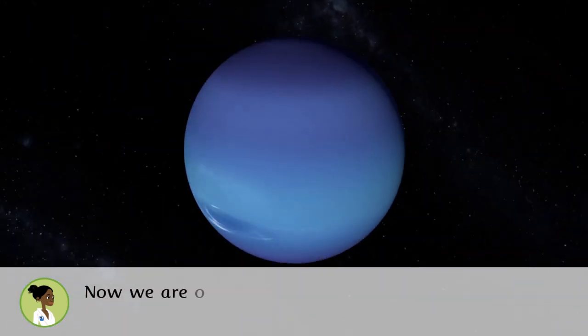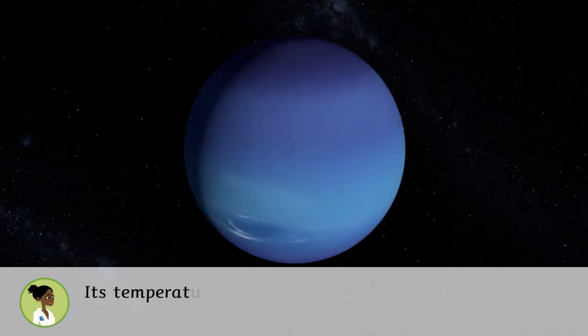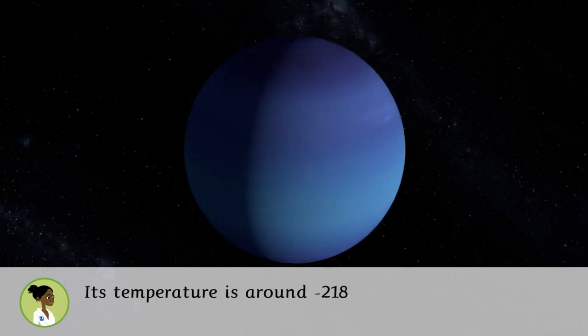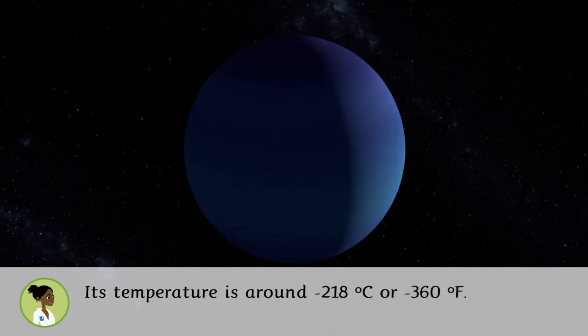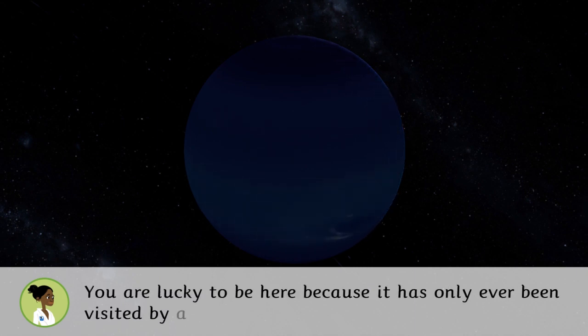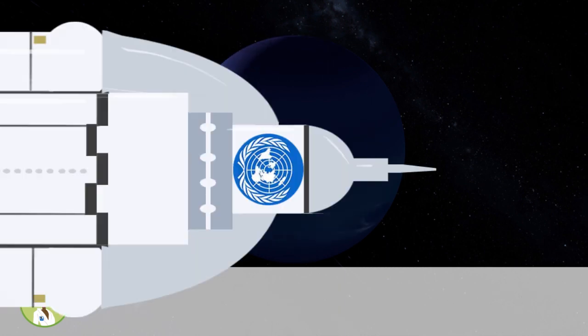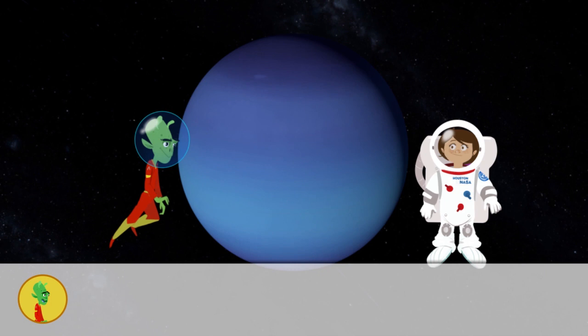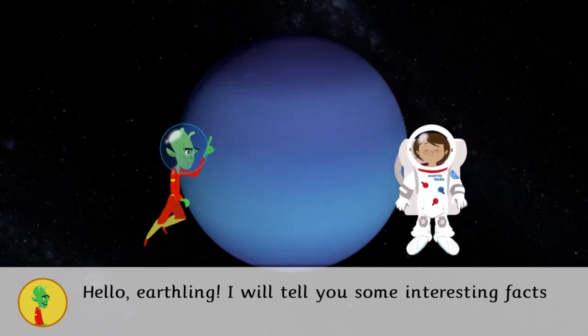Now we are on Neptune, the ice giant. Its temperature is around 218 degrees Celsius below zero or 360 degrees Fahrenheit below zero. You are lucky to be here because it has only been visited by an unmanned spaceship, the Voyager 2. Hello Earthling! I will tell you some interesting facts about Neptune.